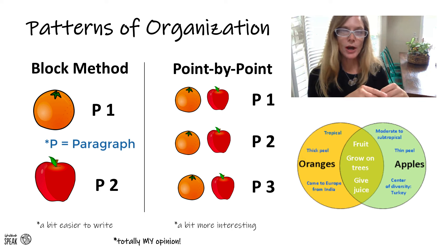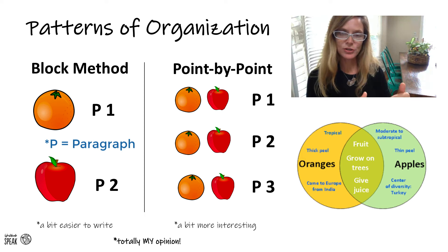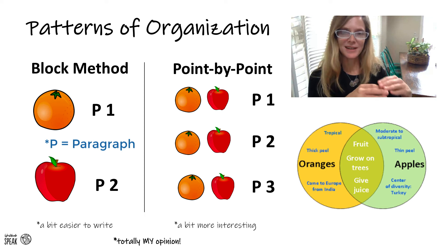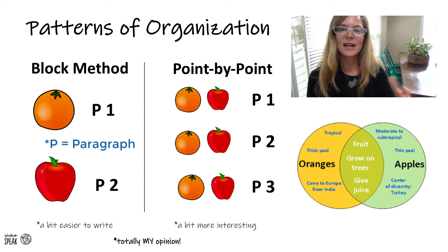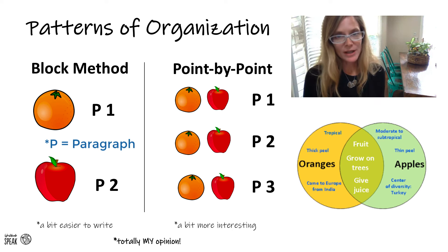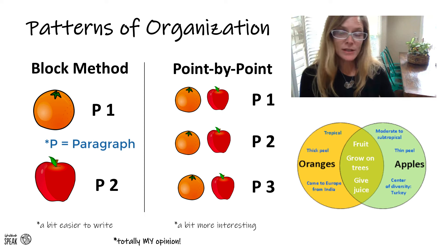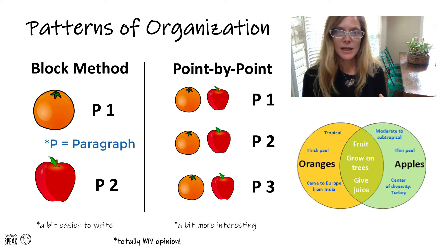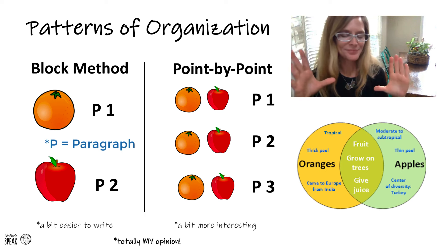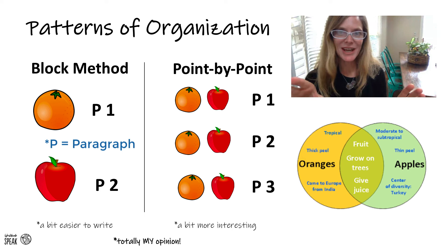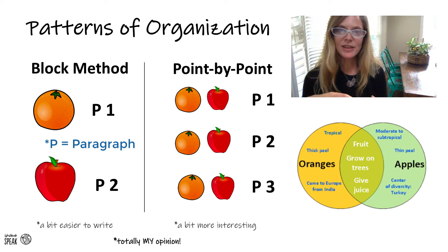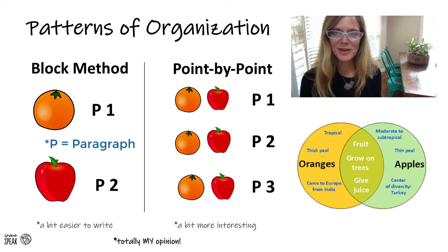The point-by-point method talks about both things you're comparing in each paragraph, and there are going to be more paragraphs — it won't just be two like the block method. In paragraph one we'll talk about one point of comparison covering both the orange and the apple. In paragraph two we'll focus on a different point of comparison, again covering both. The block method is great to start out with and maybe a little bit easier, while the point-by-point method can go into more detail and may be more interesting for the reader.